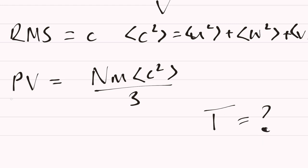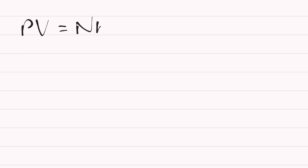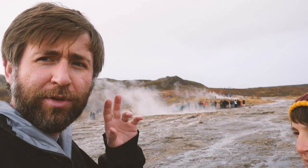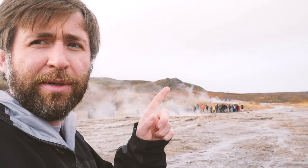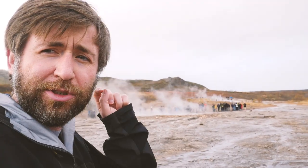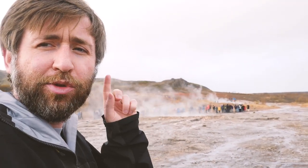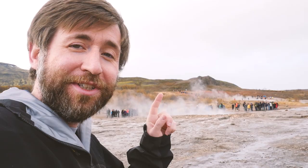To get temperature, we use the ideal gas equation: PV = NkT, where P is pressure, V is volume, N is the number of particles, k is the Boltzmann constant, and T is the absolute temperature. When using this equation, you must use temperature in kelvins, because capital T means absolute temperature in degrees Kelvin.